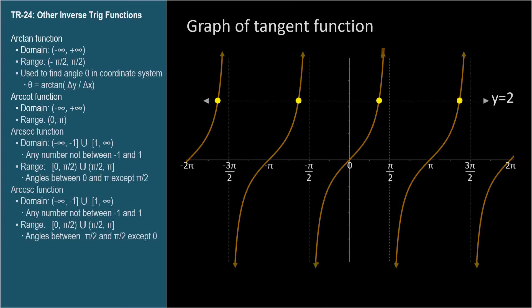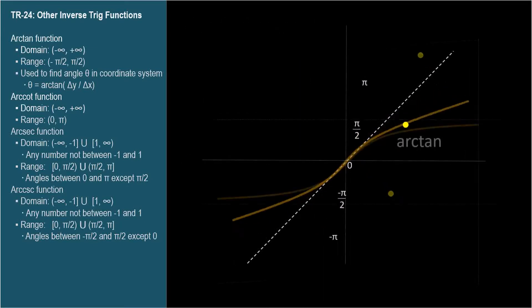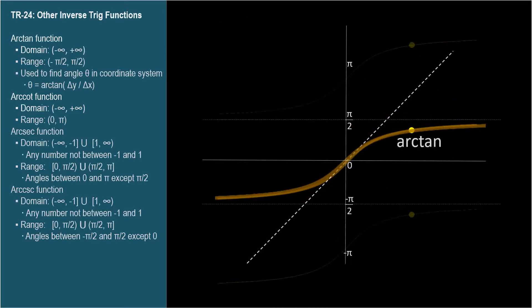So, just like we did for sine and cosine, we must limit the range of the inverse function so that it passes the vertical line test. This iteration of the curve has been selected to represent the arctangent function.